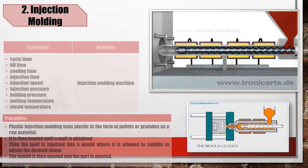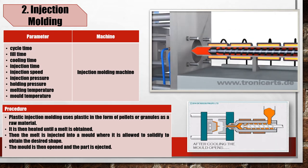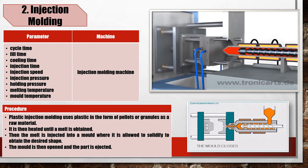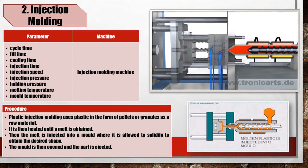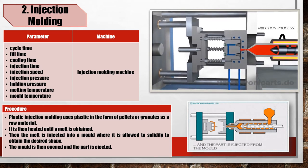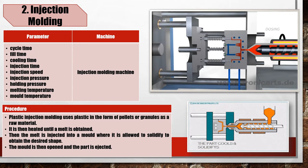Second, injection molding. The mold is then opened and the part is ejected. The parameters include cycle time, fill time, cooling time, pressure, and others.